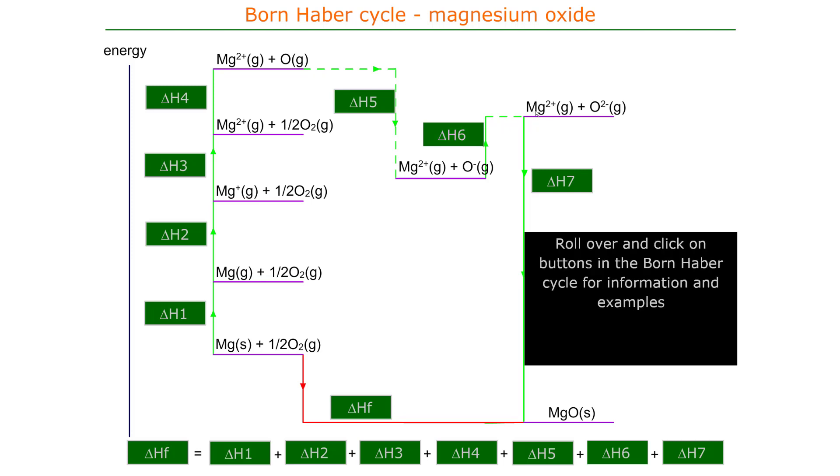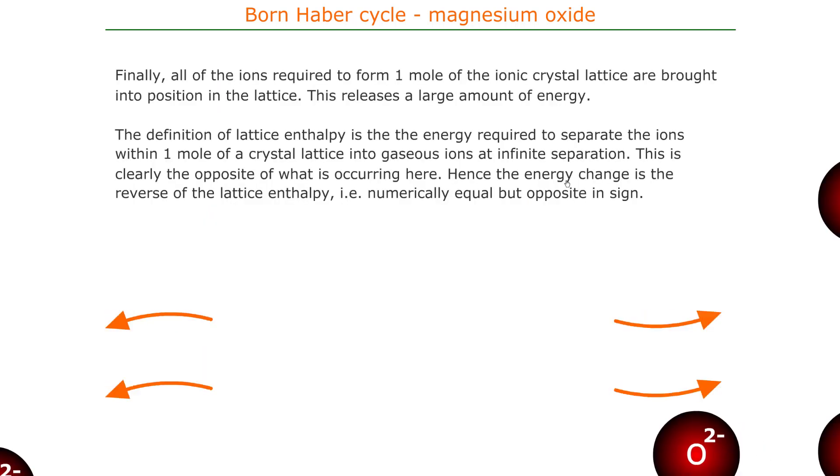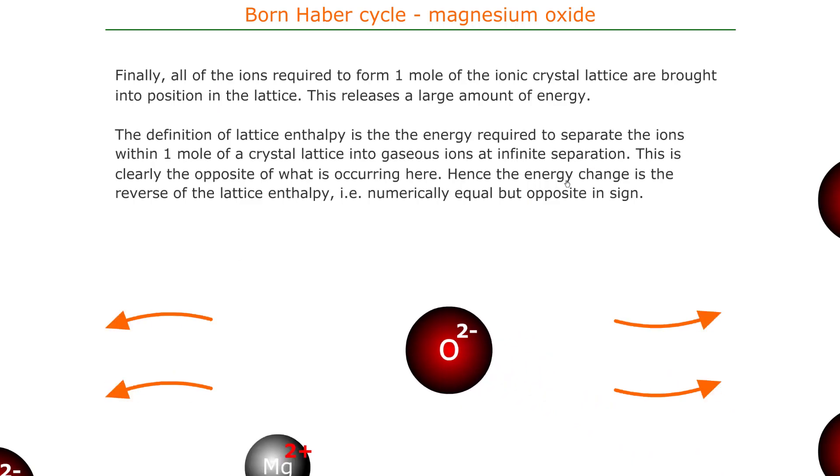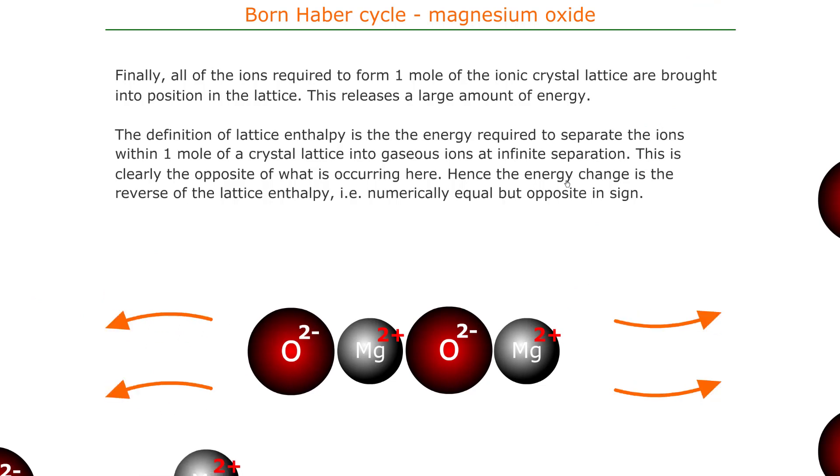At this stage we have magnesium gaseous ions plus oxide gaseous ions. The last step is the reverse of the endothermic lattice enthalpy. In other words this is an exothermic process where we're bringing together all of the ions into their positions in the lattice. This releases a massive amount of energy.